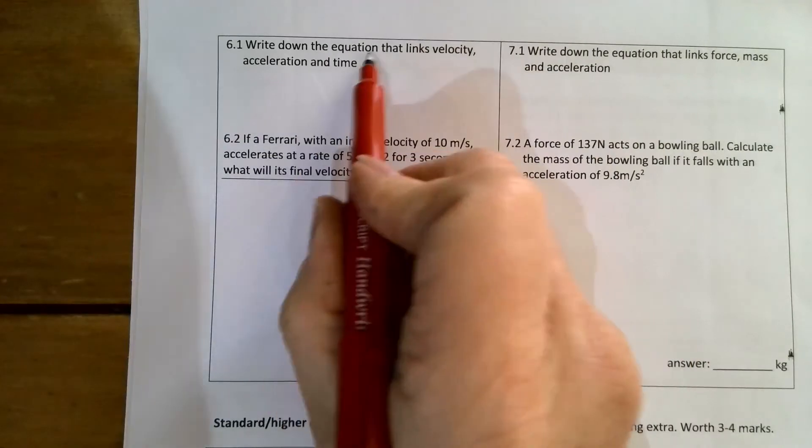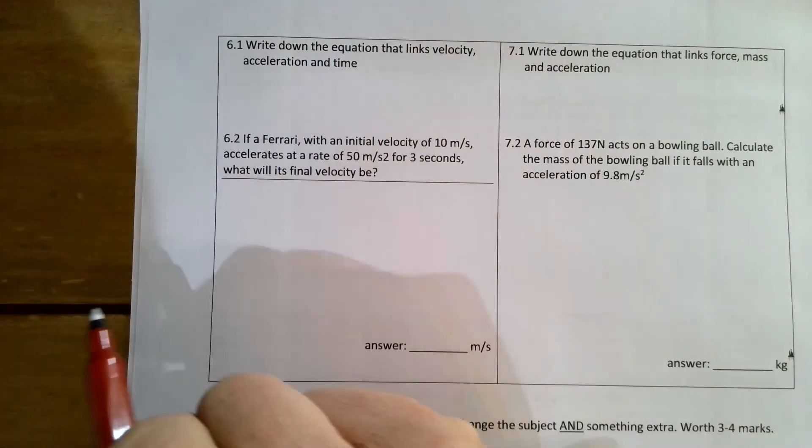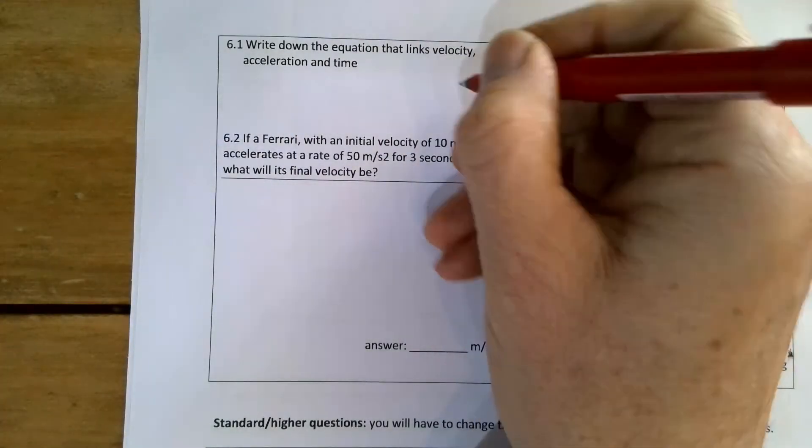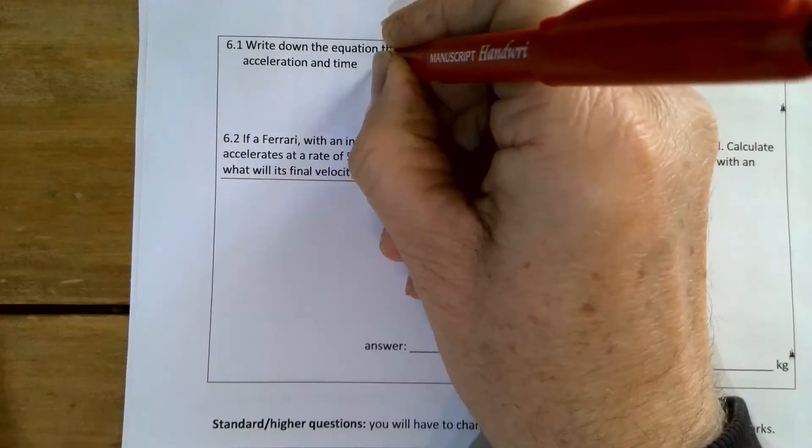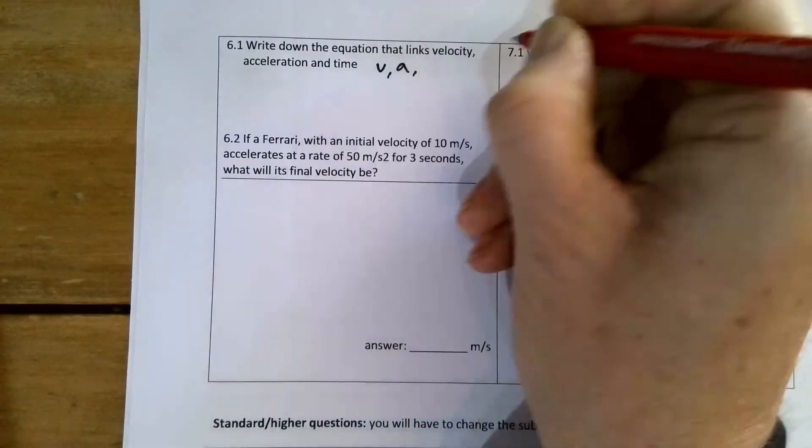It's asking me to write down the equation that links velocity, acceleration, and time. I've got v, a, and t.